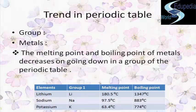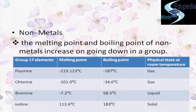For non-metals, the melting point and boiling point increase on going downwards in a group of the modern periodic table. For example, in Group 17, the halogens — fluorine, chlorine, bromine, and iodine — show a gradual increase in both melting point and boiling point on going down the group.